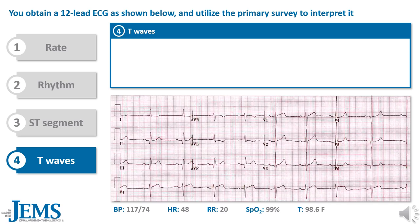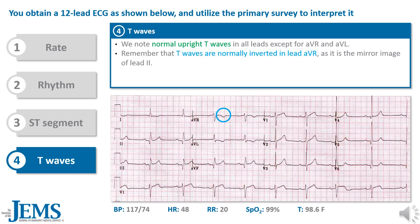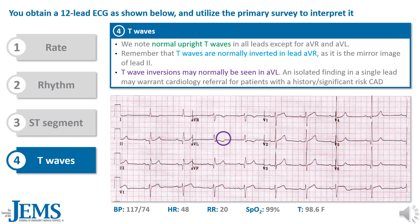Lastly, let's look at the T waves. We note normal upright T waves in all leads except for AVR and AVL. Remember that T waves are normally inverted in lead AVR, as it is a mirror image of lead 2. T wave inversions may normally be seen in AVL. An isolated finding in a single lead may warrant cardiology referral for patients with a history or significant risk of coronary artery disease.